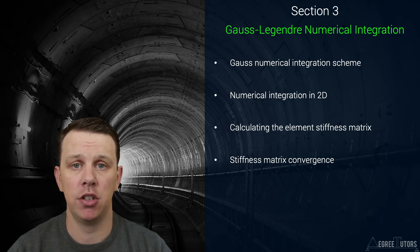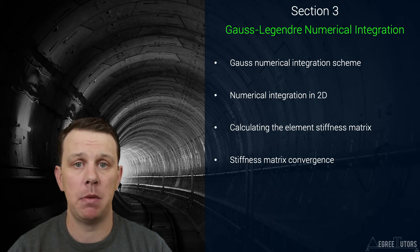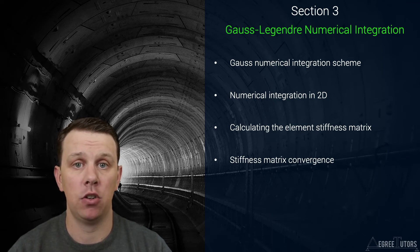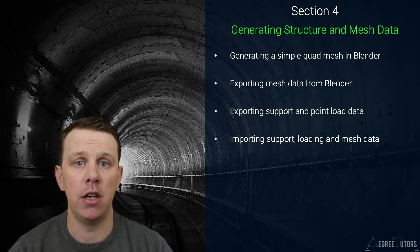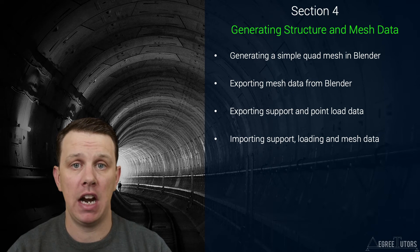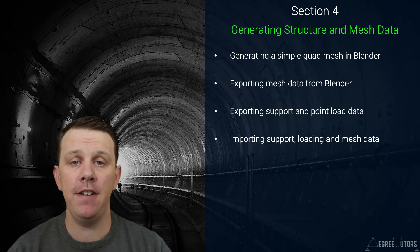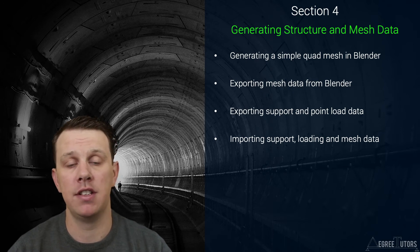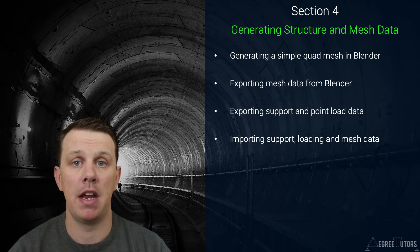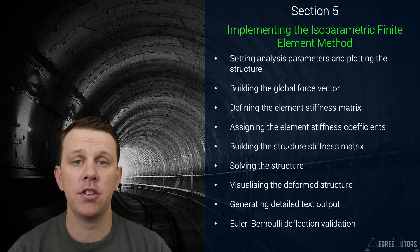In section 3 we're going to cover the topic of numerical integration. The need to perform numerical integration to calculate the element stiffness matrix is one of the big differences between applying the finite element method to 2D continuum elements versus simpler linear beam and bar elements covered in other courses. We'll cover how and why this technique works before applying it to our specific problem. In section 4 we'll take a break from theory and head over to Blender, the open source 3D modeling tool, to generate our structural finite element meshes.